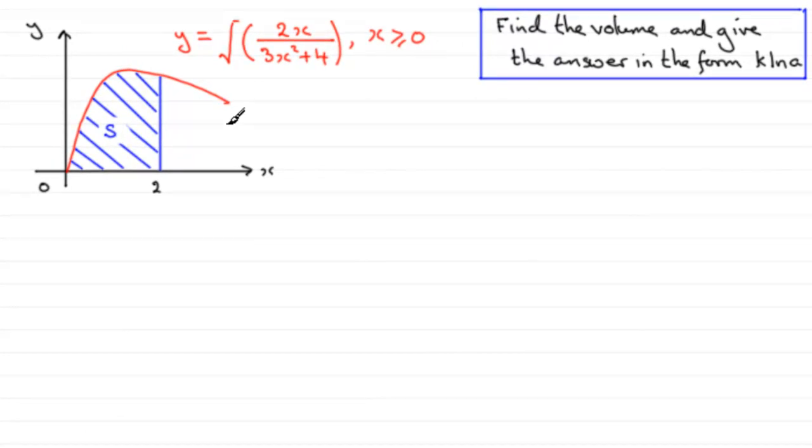Now for this question, we're given this graph with this equation here, y equals the root of 2x all over 3x squared plus 4, for x greater than or equal to 0.